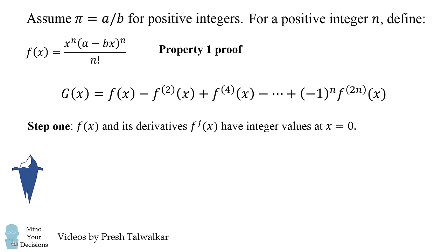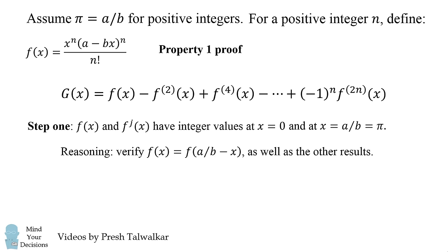The complementary part of this step is that this result is also true at x equals pi which equals a/b. To see that, verify that f(x) is equal to f(a/b - x). You can then verify that f(x) and all of its derivatives will have integer values at x equals pi.